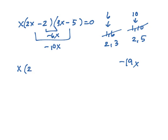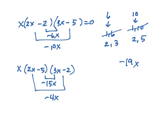Let's try the other combination. So, 2x minus 5 and 3x minus 2. So, we have negative 15x. And then we have negative 4x. Bingo! Works. So, I know that now I have the correct combination.